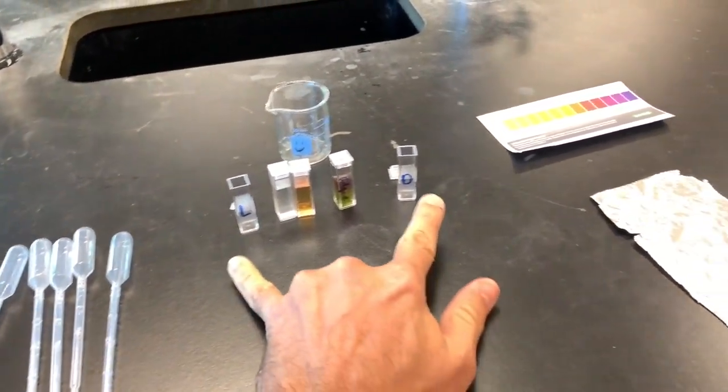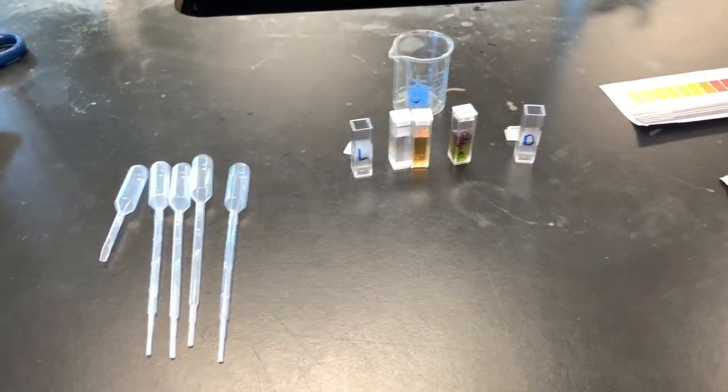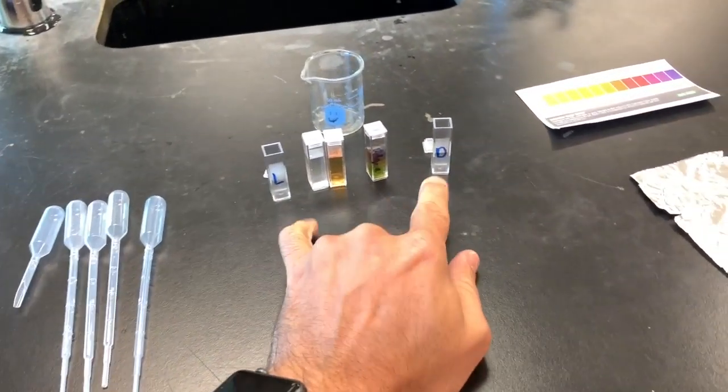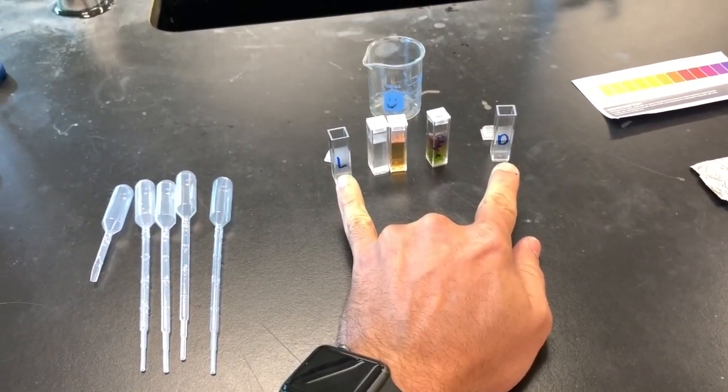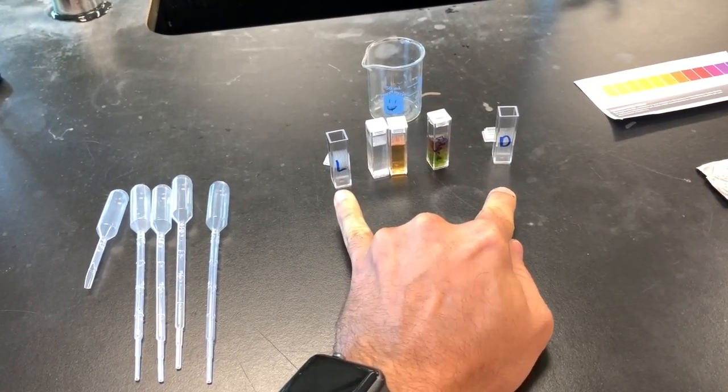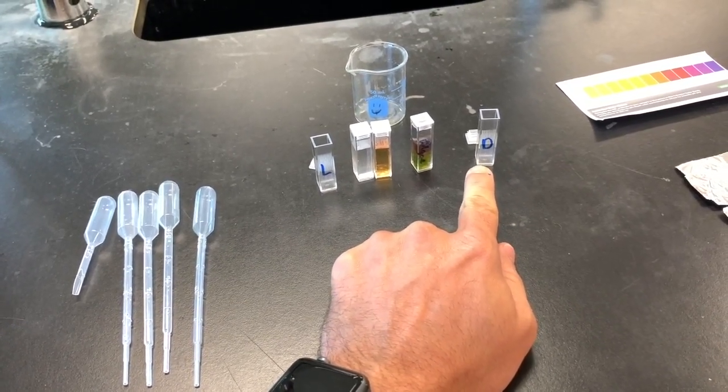So step one is going to be, if you look at your protocol sheet, which will also be here at your lab station, which is these steps I'm going over right now, the first thing you're going to do is label the two empty cuvettes L and D. One is going to be for the algae beads that get placed in light, and the other one's going to be the algae beads that get placed in the dark.